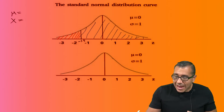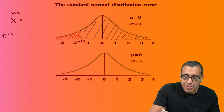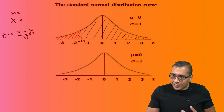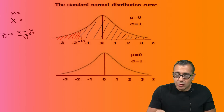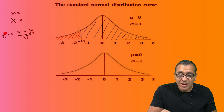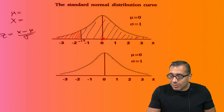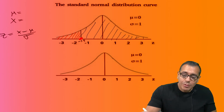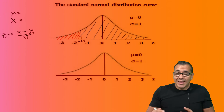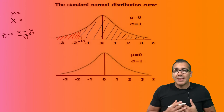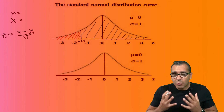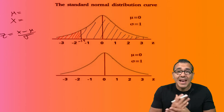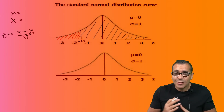We have this formula: Z equals X minus mu divided by the standard deviation. You would standardize things by plugging in all your information to get the Z value, which tells you exactly where that number lies on our graph. Let's say it was negative 1.5 — we draw our line at negative 1.5. If you're using technology, specifically a TI-84 calculator, that's what we're going to focus on today.